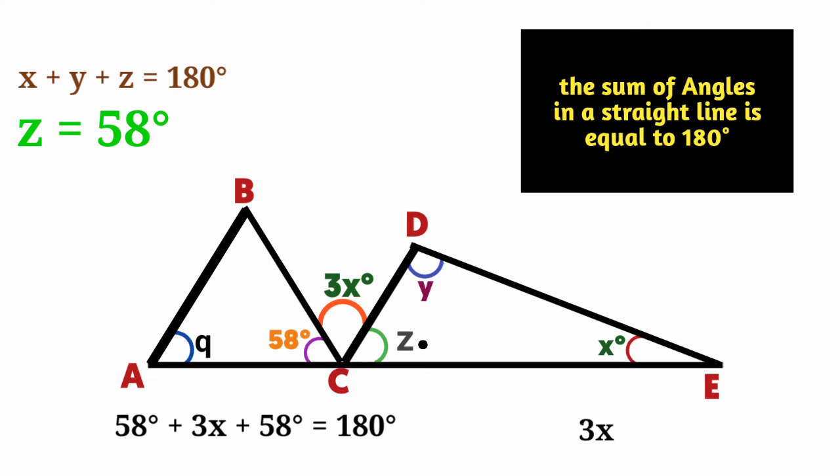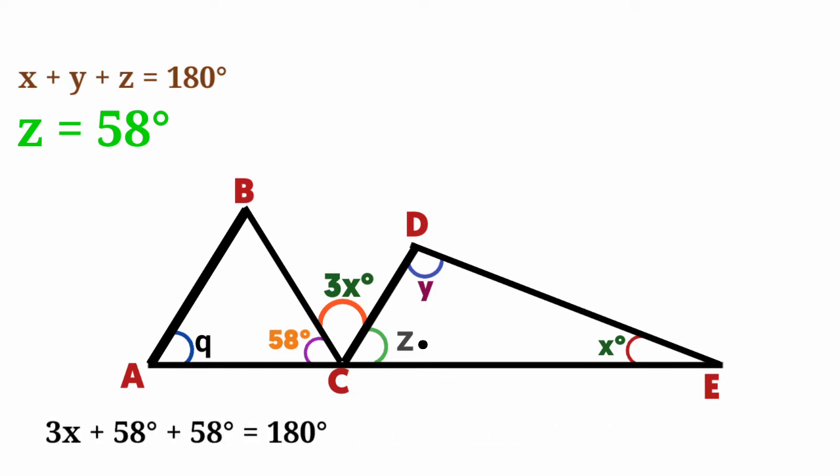Collect the like terms. You're going to have 3x plus 58 degrees plus 58 degrees equals 180. 58 plus 58 is 116, so 3x plus 116 equals 180. 3x equals 180 degrees minus 116. 3x equals 64 degrees. To find the exact value of x, divide both sides by 3. X equals 64 degrees by 3, which equals 21.3 degrees.